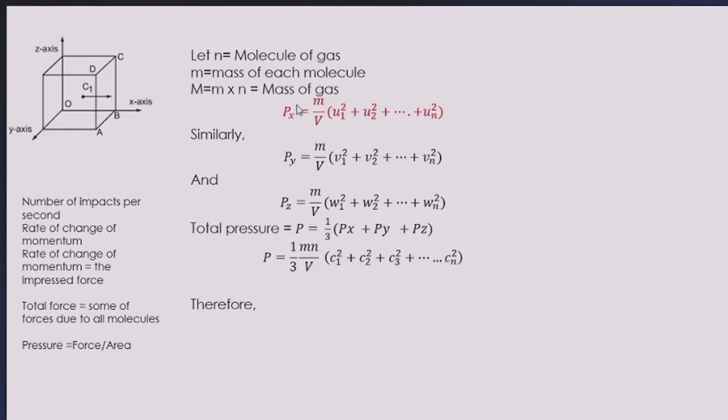So when you substitute these expressions PX, PY and PZ in this expression, you will find that capital P comes out to be equal to 1 by 3 M into N divided by capital V, into this term C1 square plus C2 square plus C3 square so on to CN square, where C1 square will be equal to U1 square plus V1 square plus W1 square. So we can now substitute this MN as equal to capital M, and divided by V, that is mass by volume, gives you the density of the gas.